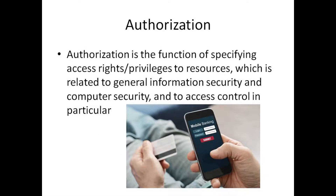The second layer of AAA of security is authorization. Authorization is providing appropriate access or permission to the appropriate user. For a low-end user, it could be a low-end access; for a high-end user, it could be a high-end access. Authorization is used for confidentiality and integrity.